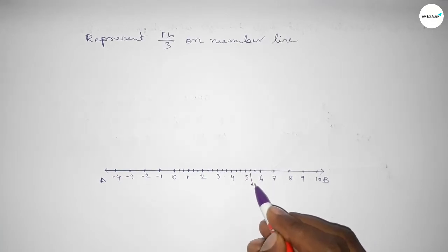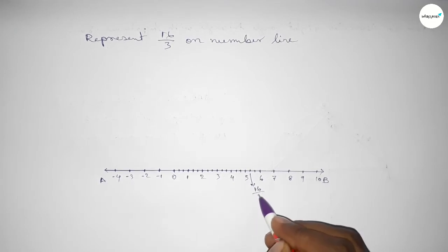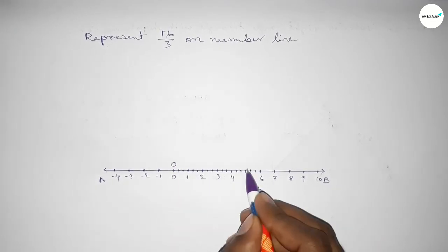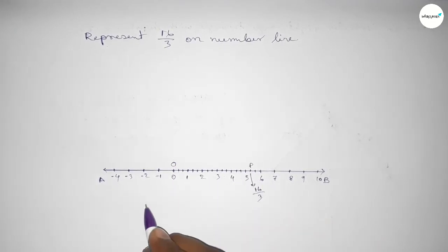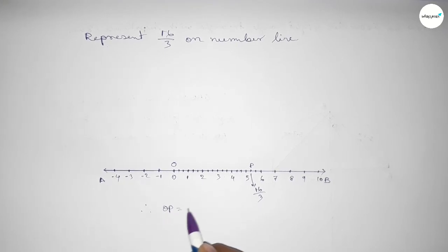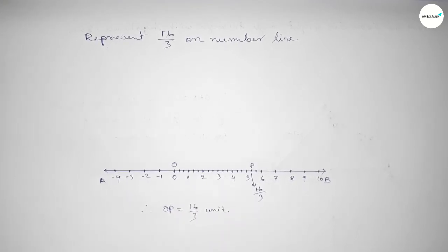And this is 16 over 3 on the number line. Taking O and P, therefore OP equals 16 over 3 units. That's all. Thanks for watching — if this video is helpful to you, please share.